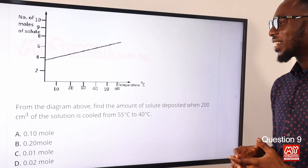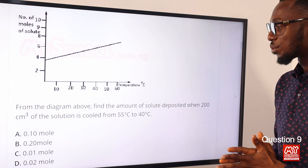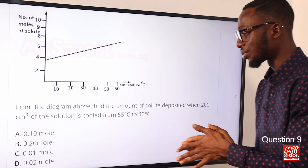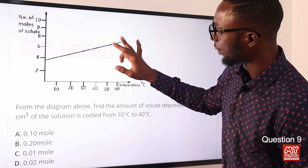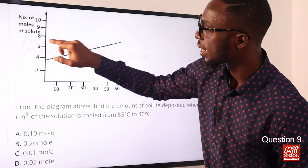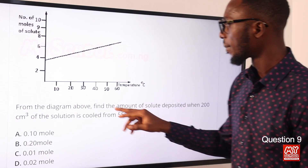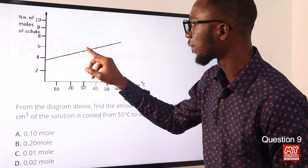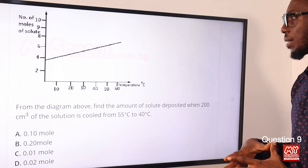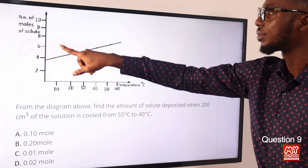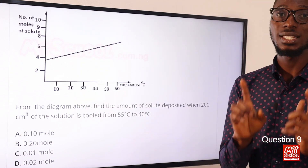Question 9: From the diagram above, find the amount of solute deposited when 200 cm³ of a solution is cooled from 55°C to 40°C. At 55°C, the solubility is around 7 moles per 1000 cm³. At 40°C, it falls close to 6 moles per 1000 cm³. So the difference is 7 − 6 = 1 mole per 1000 cm³.